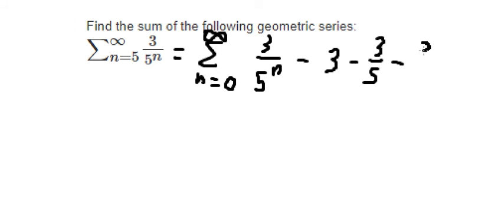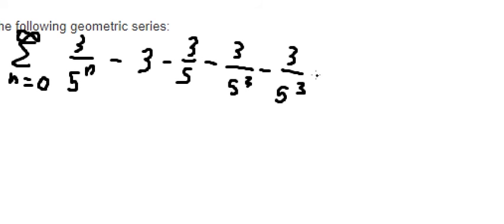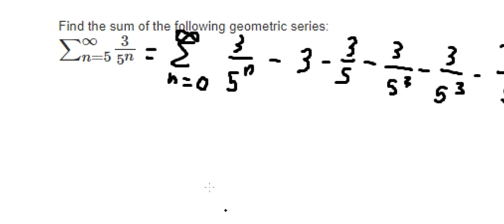...3 over 5², 3 over 5³, and 3 over 5⁴, because the summation starts at n equals 5. This means we start from n equals 0, and then we need to subtract all these numbers.